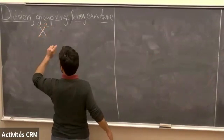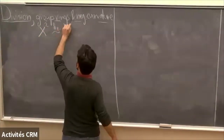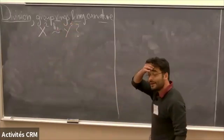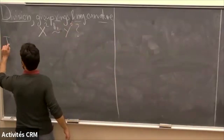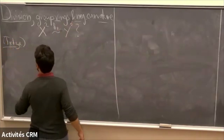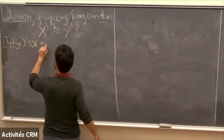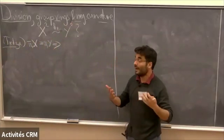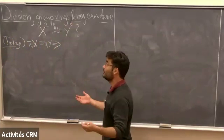By spaces I mean finite CW complexes. You can ask: when is X homotopy equivalent to Y? Well, they better have the same fundamental group. And if they do, there's an old theorem — not our theorem — of Whitehead, which you can phrase as follows: if the fundamental groups of X and Y are the same, then they become homotopy equivalent after you wedge both of them with possibly a large number of two-dimensional spheres.